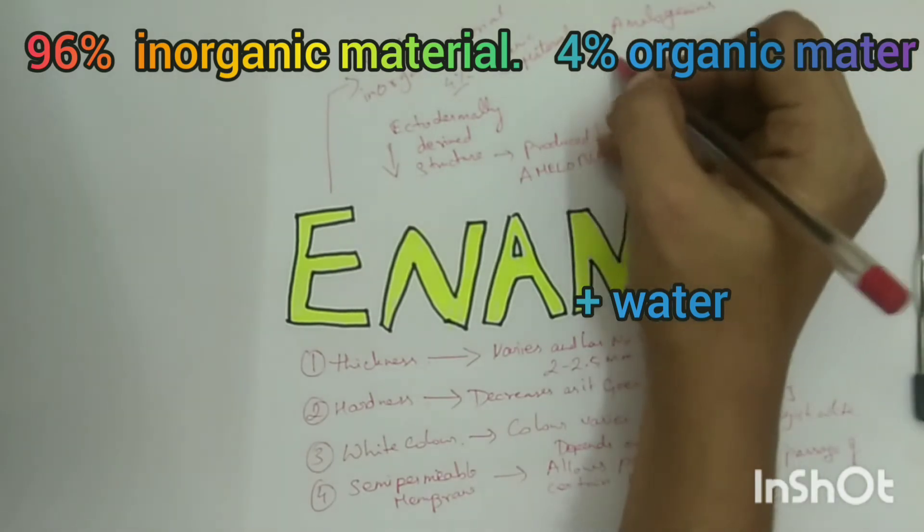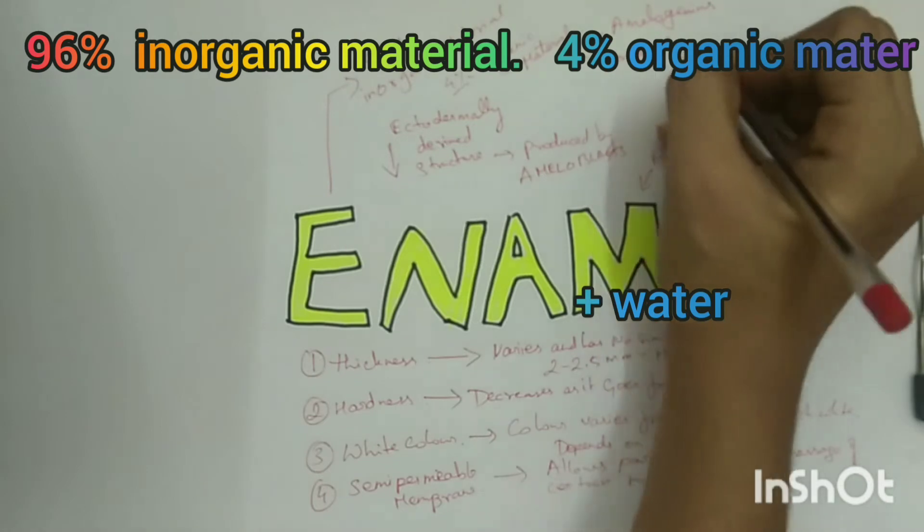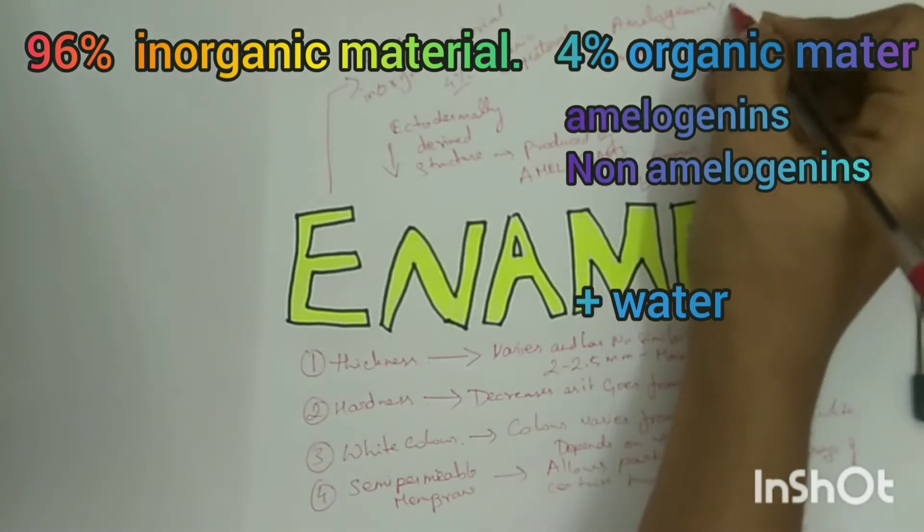The organic matrix of enamel is made up of two types of non-collagenous proteins: amelogenins and non-amelogenins.